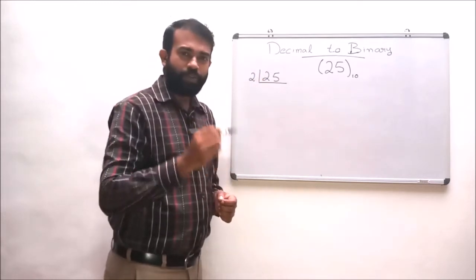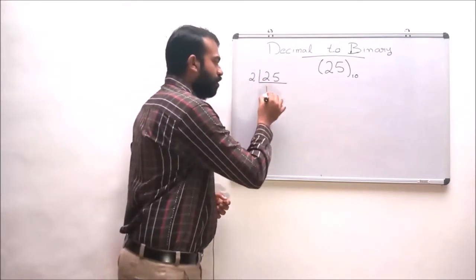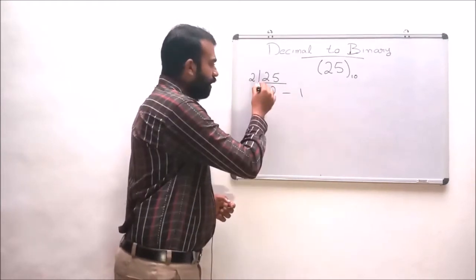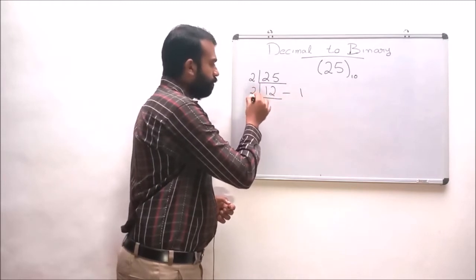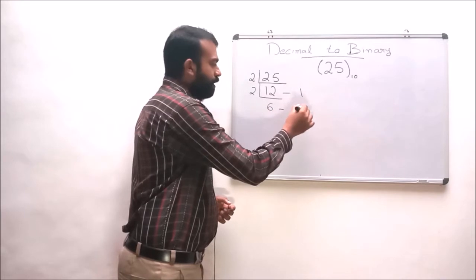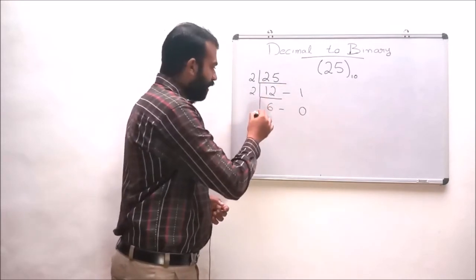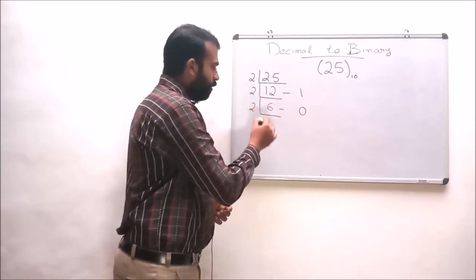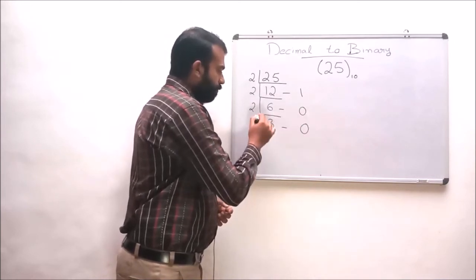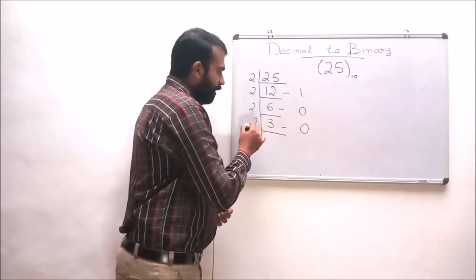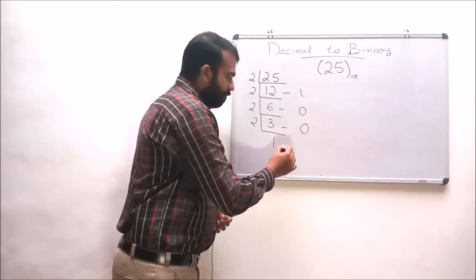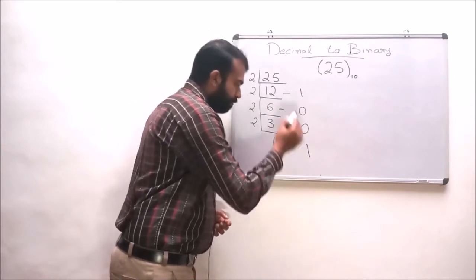25 divided by 2 gives 12 with a remainder of 1. Dividing 12 by 2 gives 6 with a remainder of 0. Dividing 6 by 2 gives 3 with a remainder of 0. And dividing 3 by 2 gives 1 with a remainder of 1.